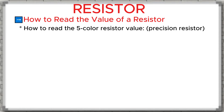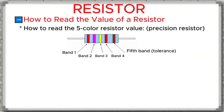Next, let's learn how to read the value of a five-band resistor, also known as a precision resistor. In a five-band resistor, the fifth band is the last one and it represents the tolerance. Because tolerance colors can vary a lot, sometimes it is difficult to tell which band is the last one. However, if you look carefully, you will notice that the last band is always spaced a little farther apart from the other bands. By using this detail, we can easily identify the tolerance band.